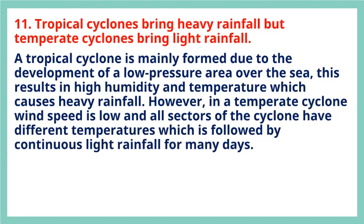Question 11: Tropical cyclones bring heavy rainfall but temperate cyclones bring light rainfall. A tropical cyclone is mainly formed due to the development of a low-pressure area over the sea, resulting in high humidity and temperature which causes heavy rainfall. However, in a temperate cyclone, wind speed is low and all sectors have different temperatures, which is followed by continuous light rainfall for many days.